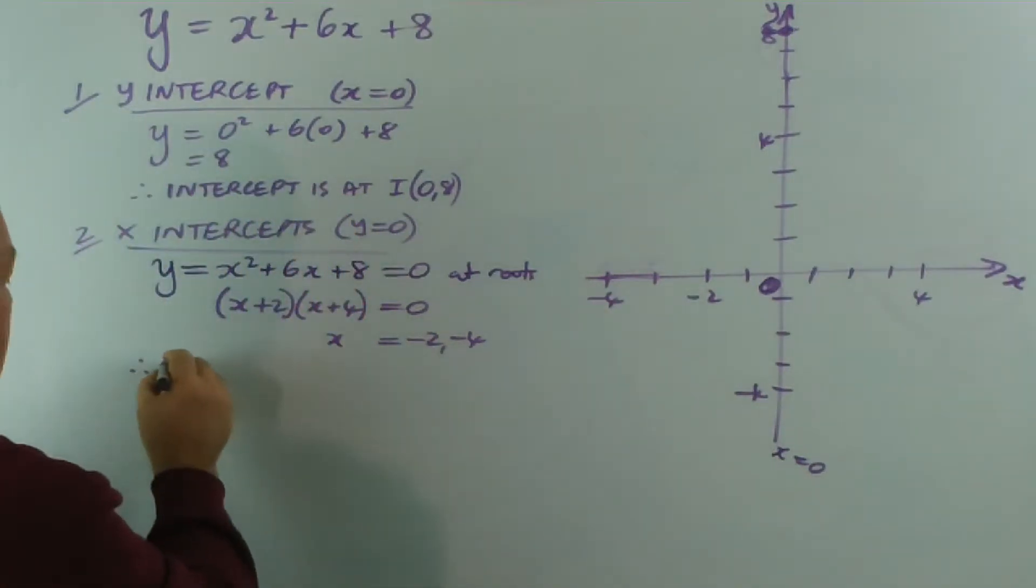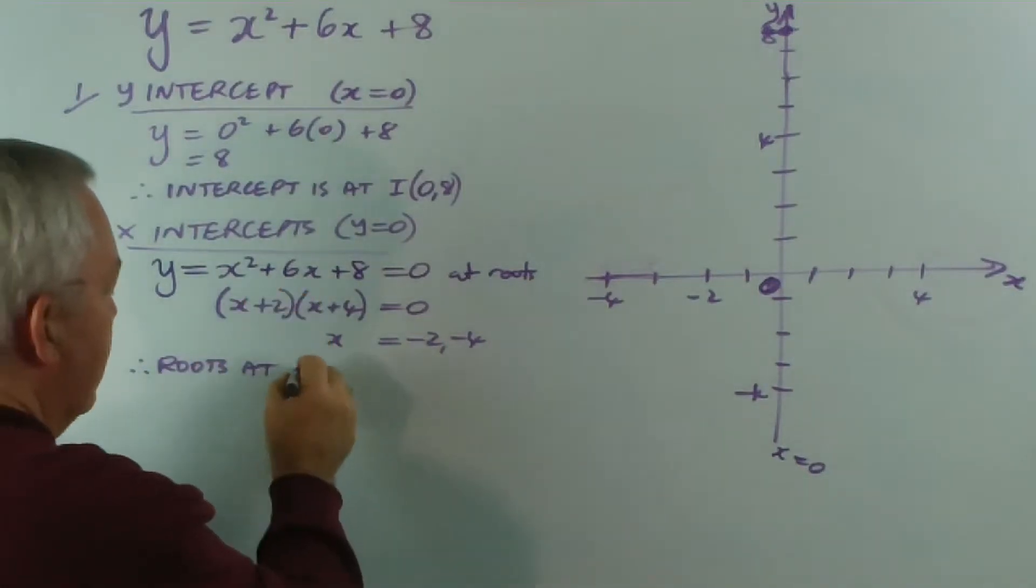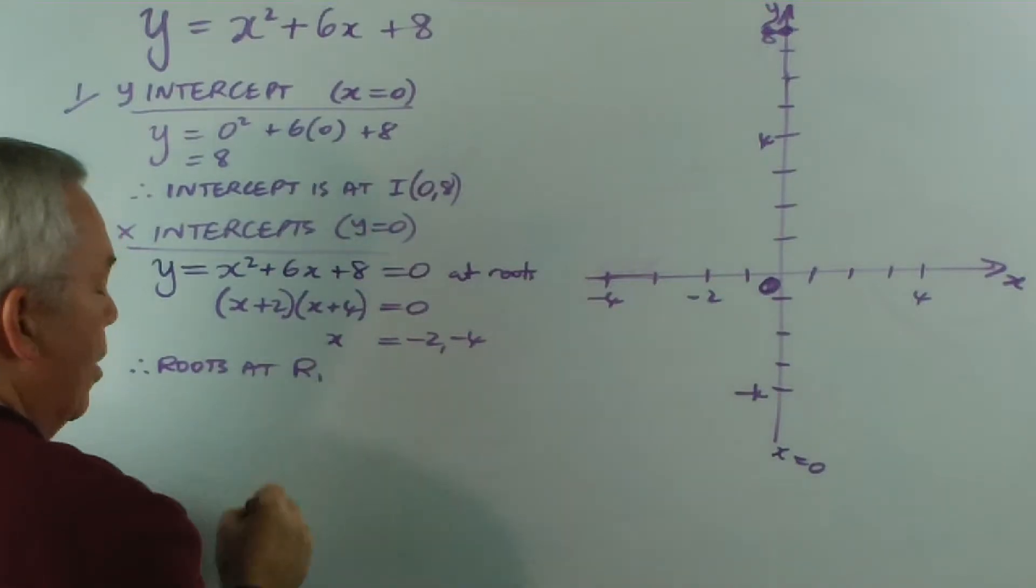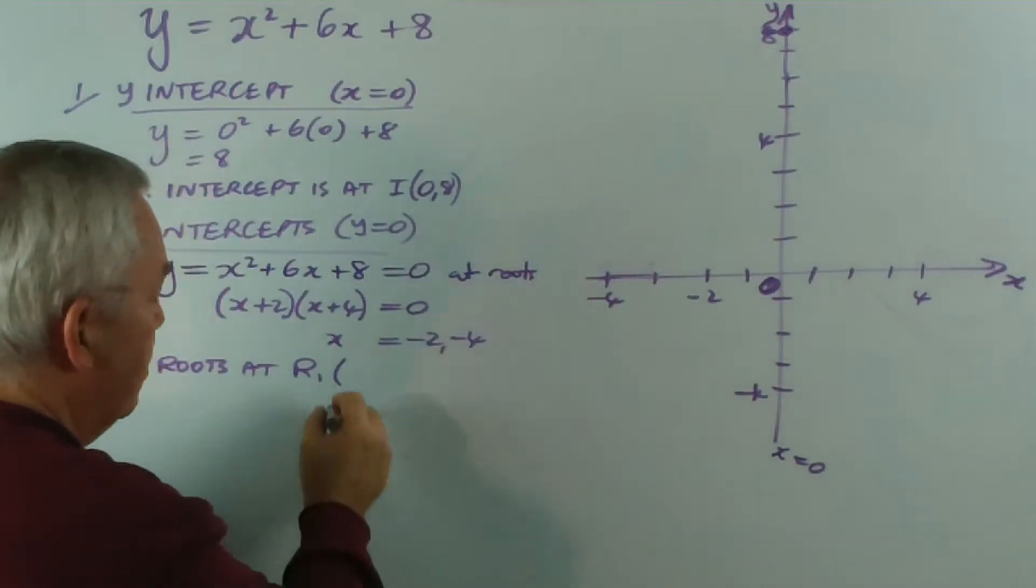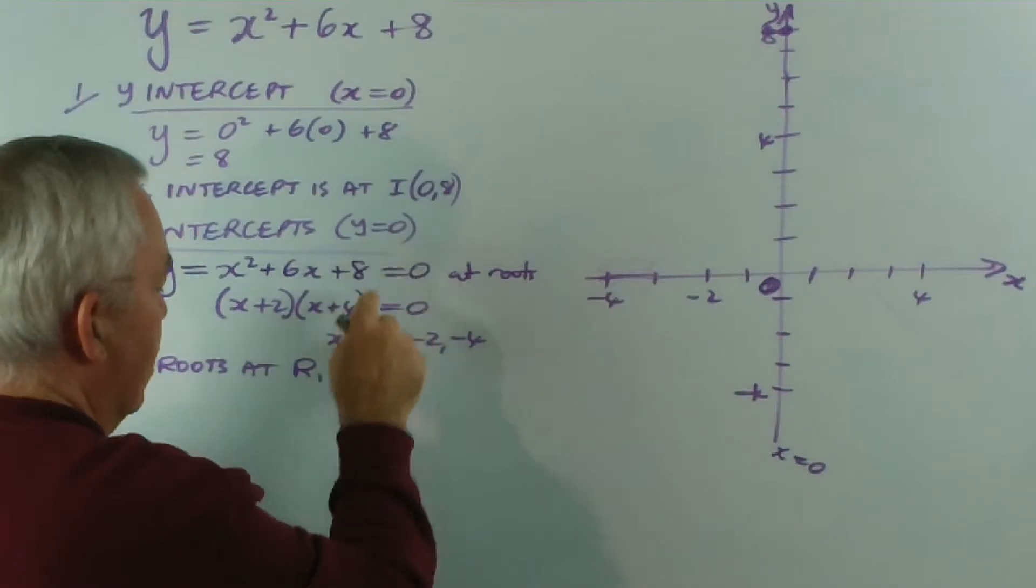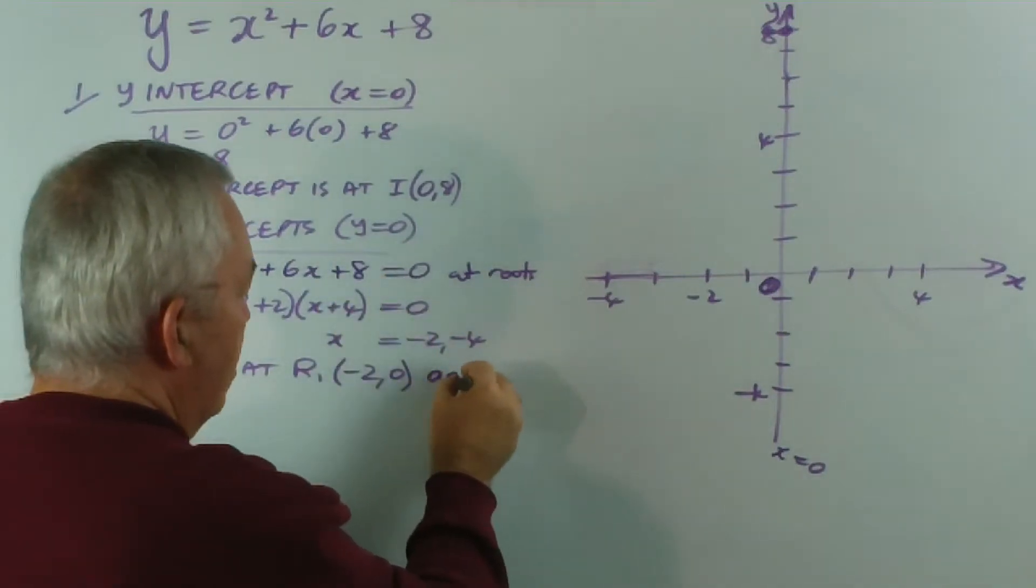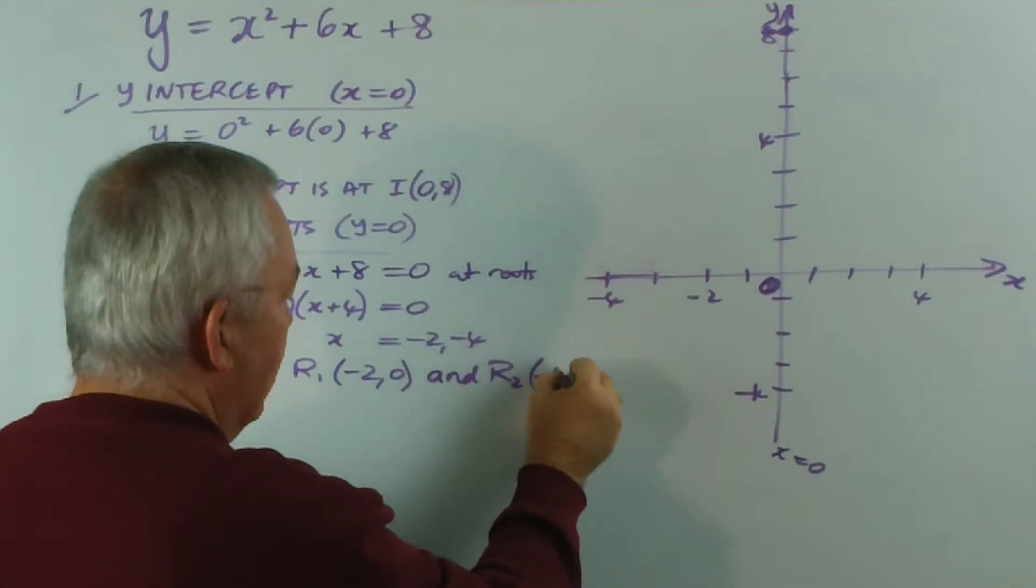So I'll say, therefore, we have roots at—or x-intercepts at—I call them R1 and R2, as you might have learned from the previous video—minus two, zero. That's when x is minus two and y equals zero. And the second root will be at minus four, zero.